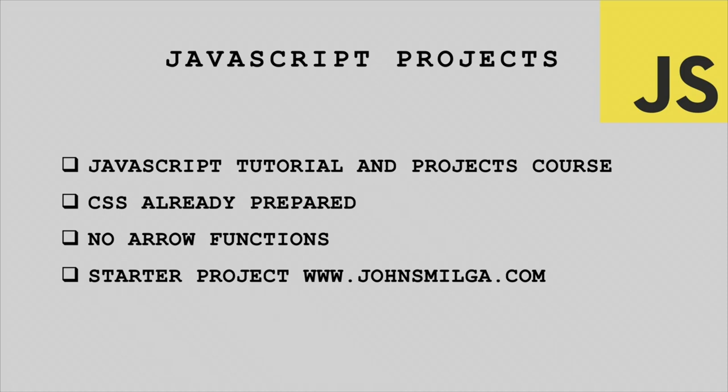Since our main goal is to practice JavaScript, all the CSS is already created for you and you just need to add a few classes in your HTML. One thing I want to mention is that during the project, we will not use arrow functions and a few other possible ES6 syntax options, simply because these projects were built as practice for the course DOM module, and at that point in the course we simply had not covered ES6 yet. The course does contain an extensive ES6 module where we cover ES6 syntax and build more interesting projects.